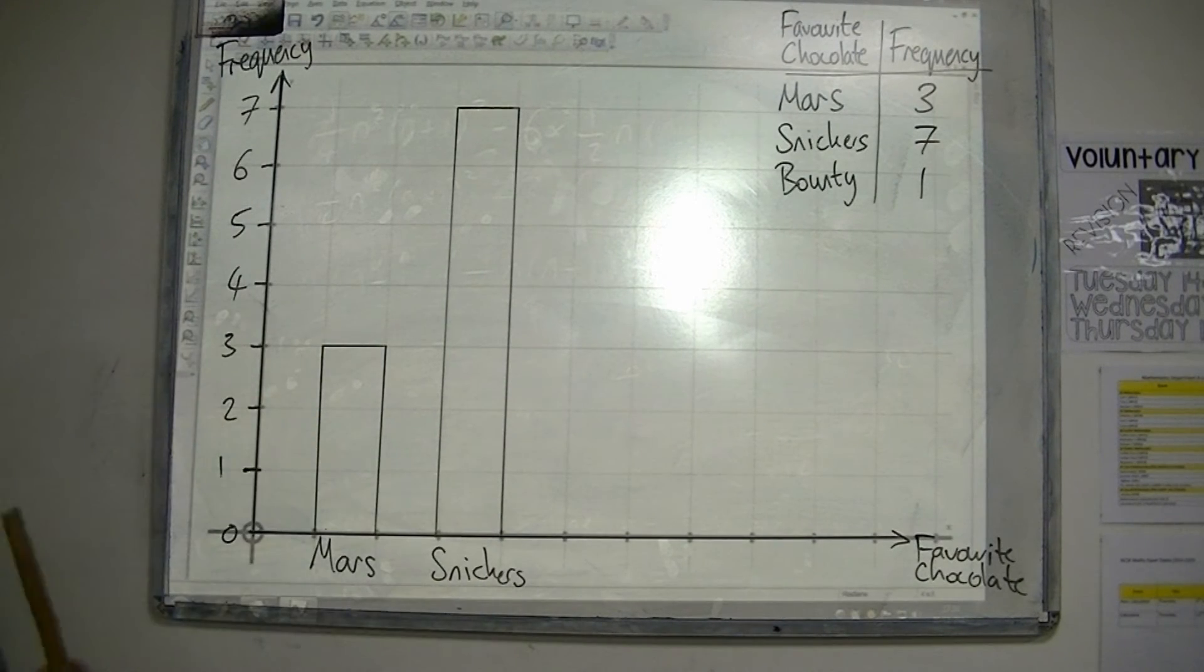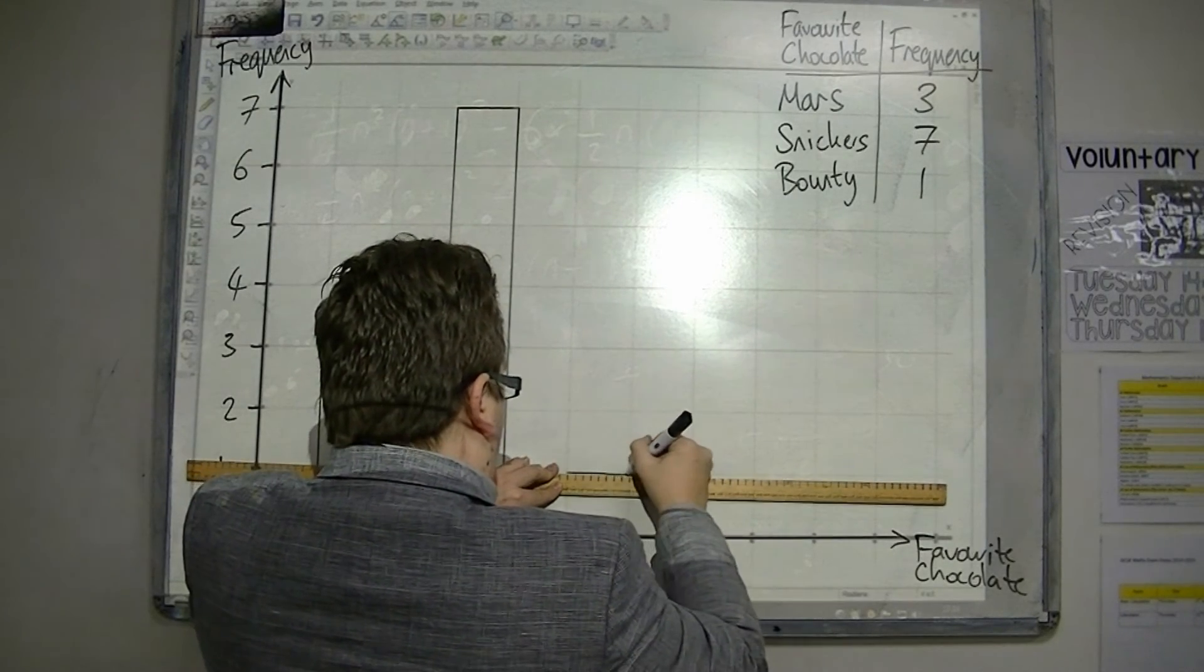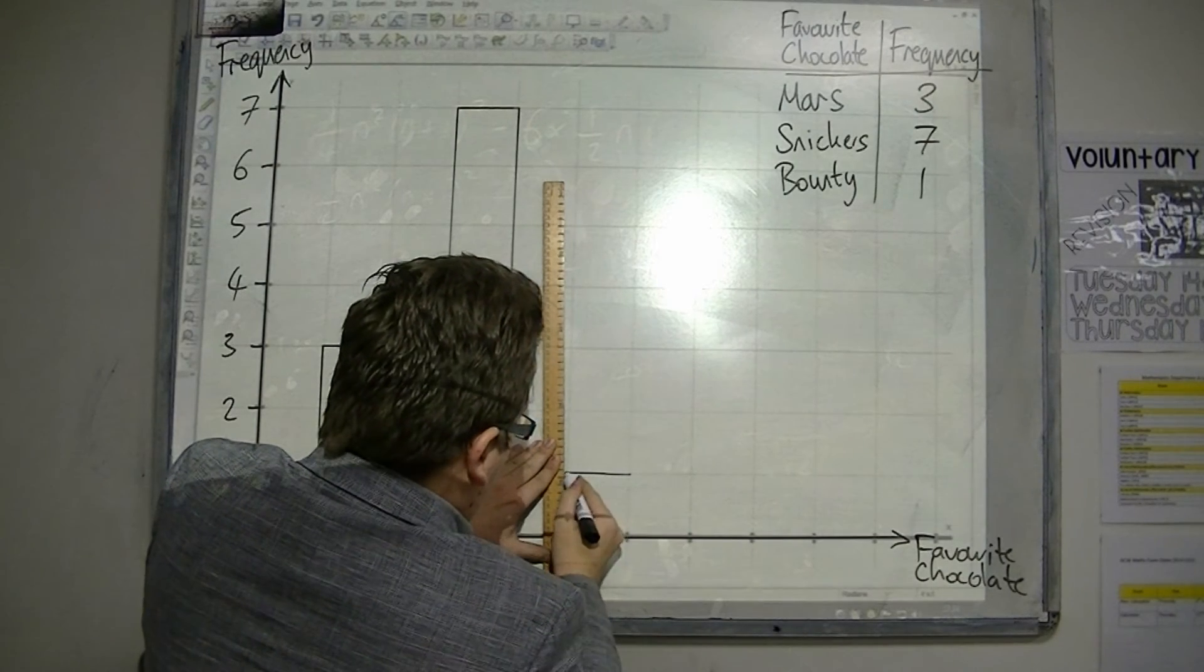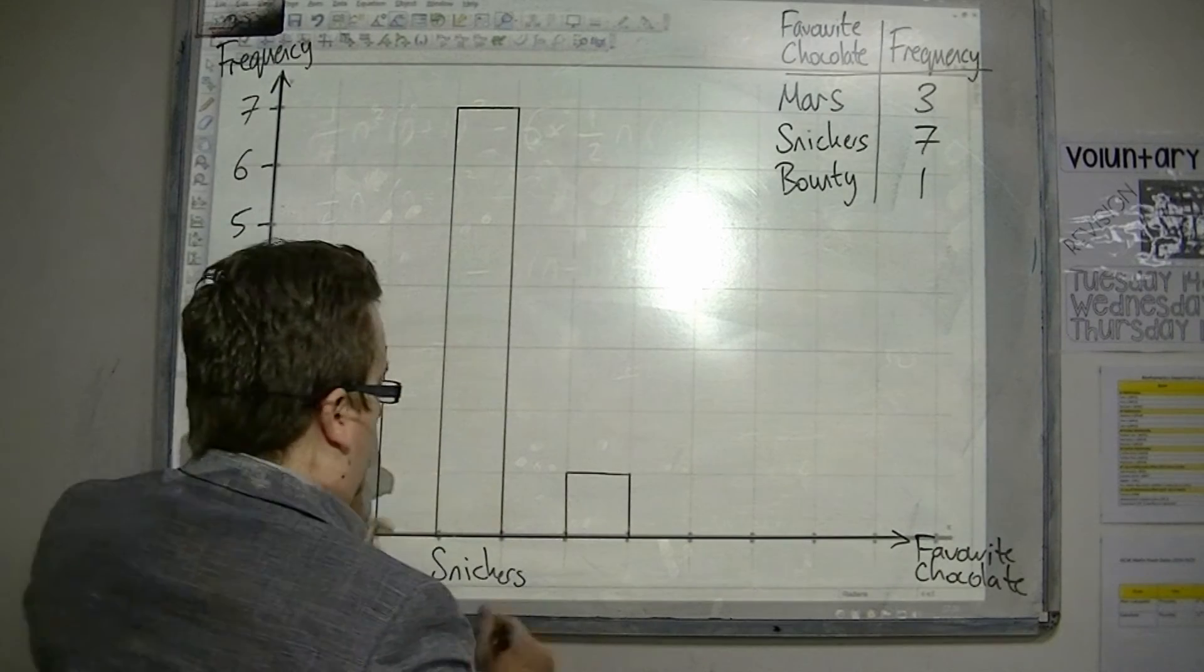And then, we have got Bounty. Now, Bounty is only one. So, we have got Bounty like that.